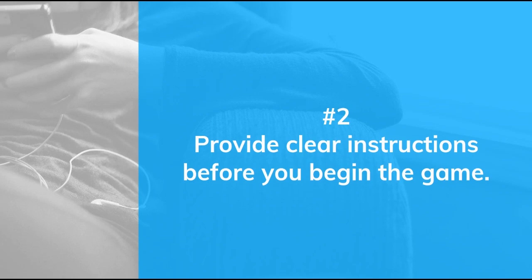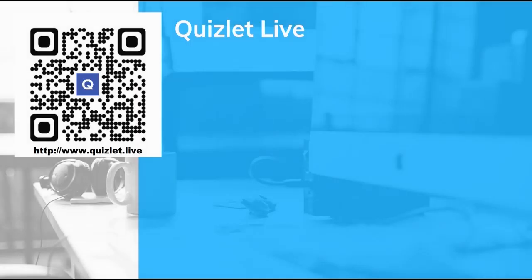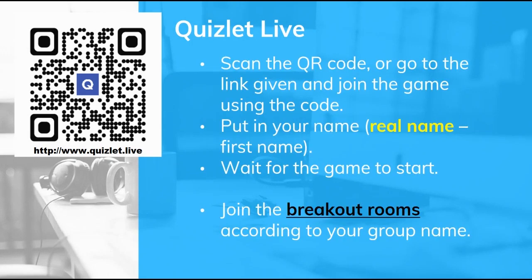Number two: make sure you provide clear instructions before you begin the game. During my online class, before I start Quizlet Live, I go through this set of instructions with my students. I tell them they must scan the QR code or go to the link given and join the game using the code. Then they must put in their real name — their first name — for easy identification by their friends and for attendance record. Then they wait for the game to start. Once I click start, they will be able to see their group members and their group name.